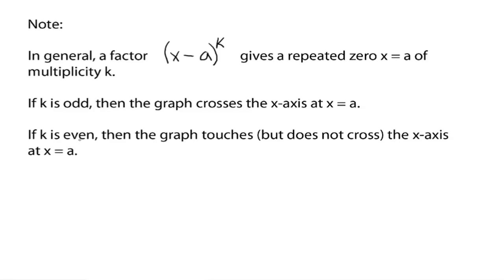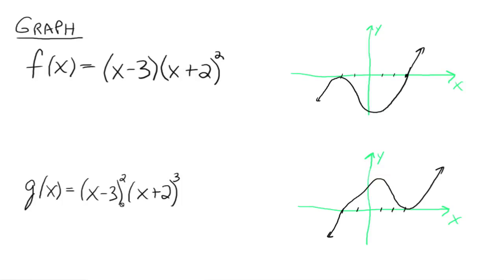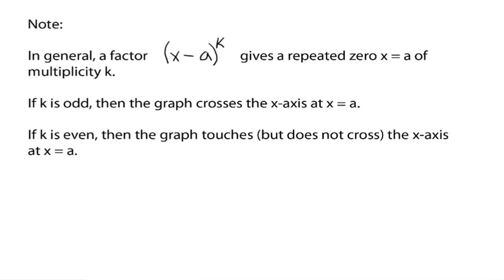If k is even, then the graph touches but does not cross the x-axis at x equals a. Alright? So that was back here with the squares: x plus 2 squared, we're going to just touch the x-axis at negative 2. And x minus 3 squared, we're just going to touch the x-axis. If this would have been a 4 instead of a 2, we'd have the same situation happening, it'd just be touching the x-axis.